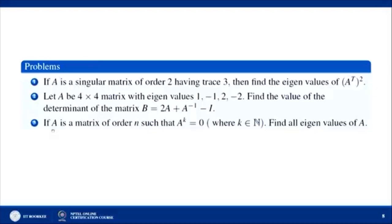For the third problem: if A is a matrix of order n such that Aᵏ = 0 for some natural number k, then all eigenvalues of A are 0. Because if any eigenvalue were nonzero, then Aᵏ would not be zero.